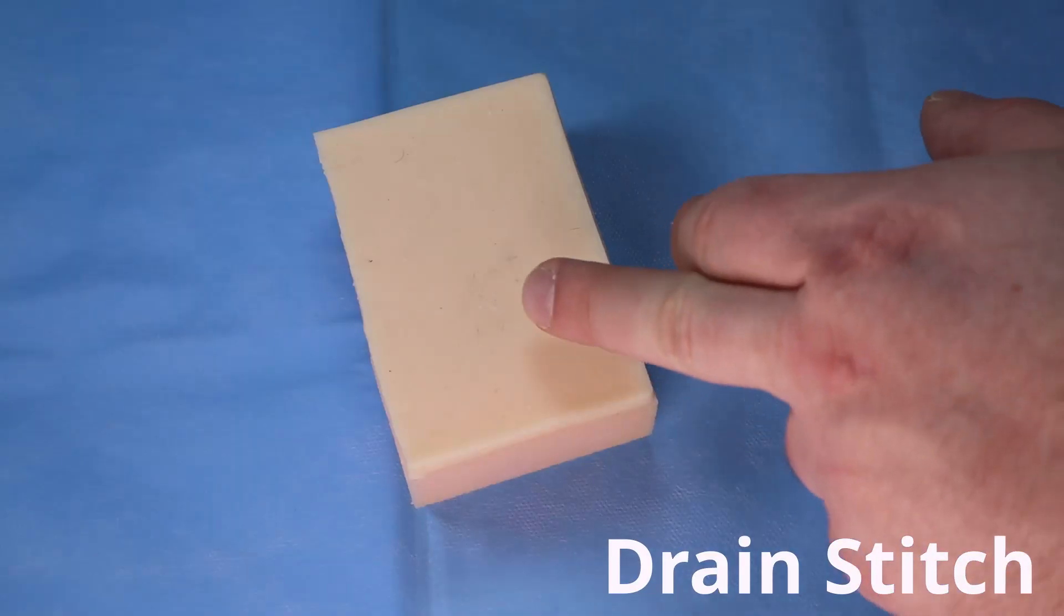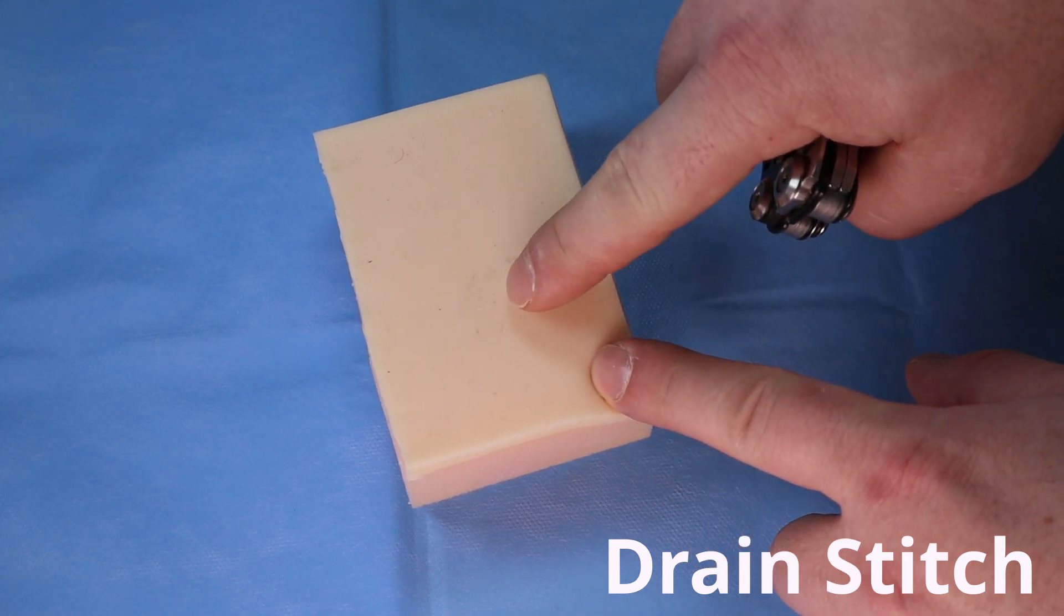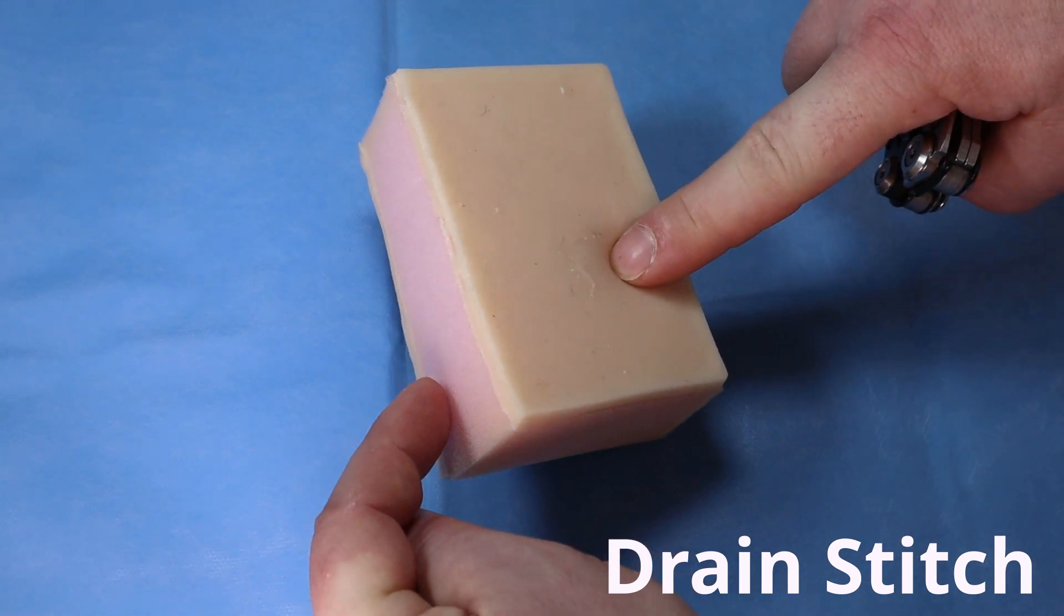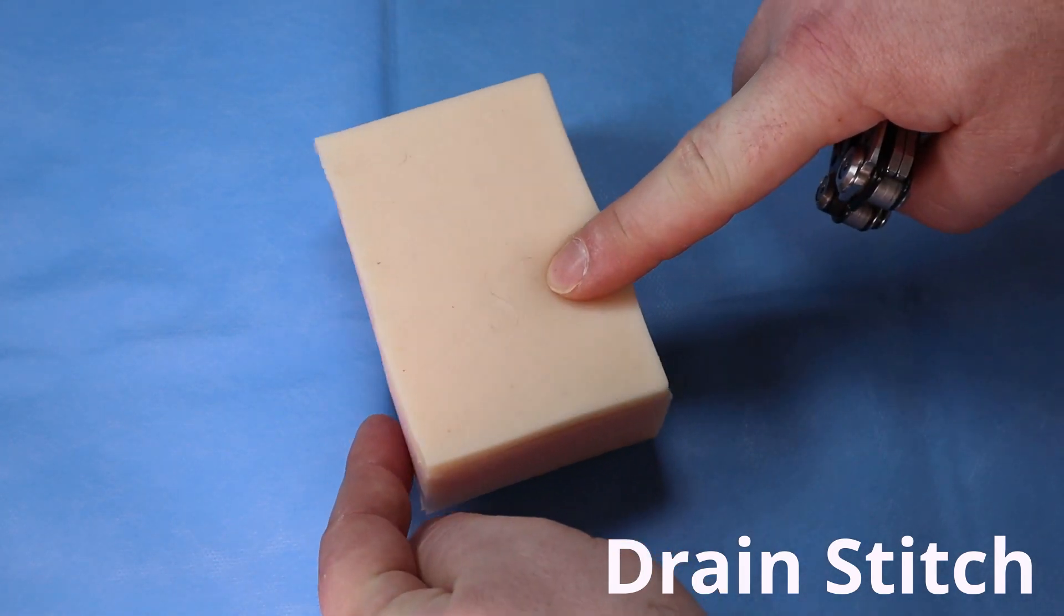Let's start with our rubber model. This is the area where I want the drain to come out, and this would be the wound area or cavity that I want to drain.